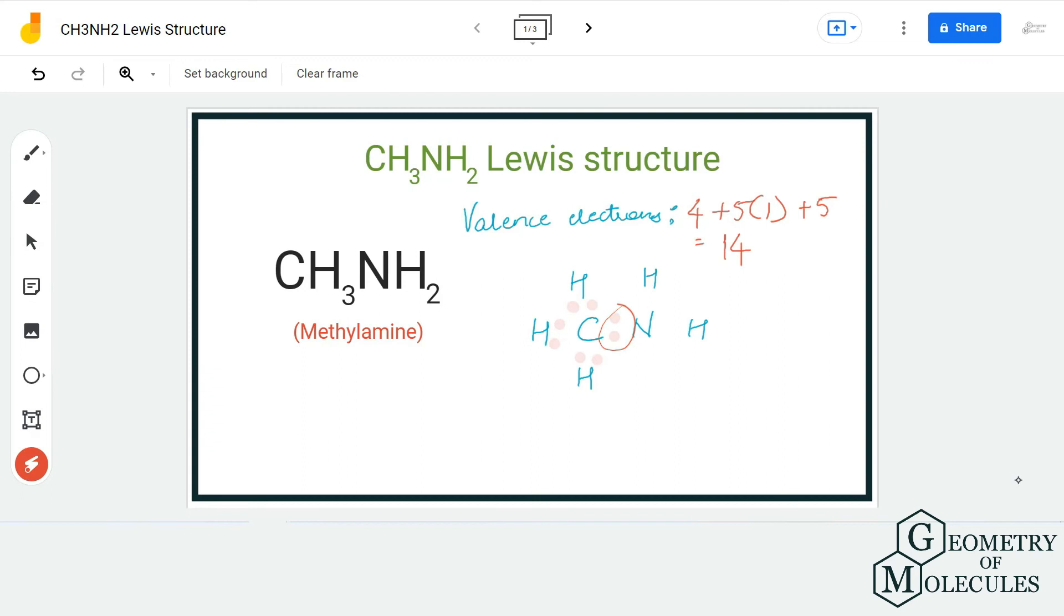And now I'm going to place the electron pairs between hydrogen and nitrogen atoms. Doing that, I will be using up 12 valence electrons. The remaining two valence electrons will be placed on the nitrogen atom.